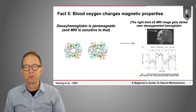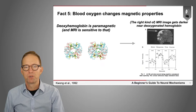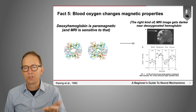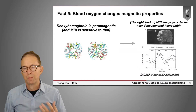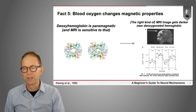We can measure those blood oxygen changes using MRI because of differences in the magnetic properties between deoxyhemoglobin and oxygenated hemoglobin. With the right kind of MRI image, we can create images where the more oxygenated hemoglobin there is, the brighter the image. This is shown in the first functional MRI study using this kind of MRI contrast: when a person moved their hand, you can see activity going up in the motor cortex; when they rest, it goes down.